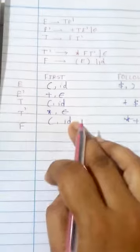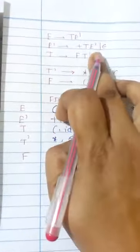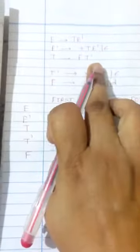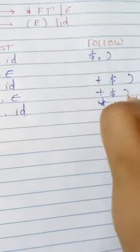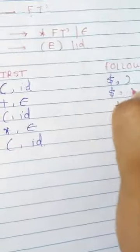For T′: T′ is the last element in its production, so FOLLOW(T′) = FOLLOW(T) = {+, $, ')'}. For E′: E′ is also the last element, so FOLLOW(E′) = FOLLOW(E) = {$, ')'}.